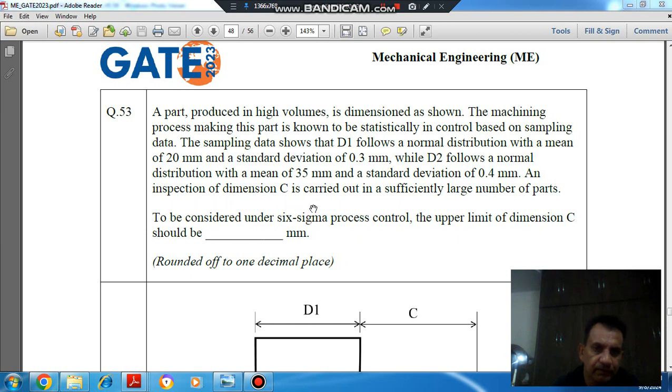An inspection of dimension C is carried out in a sufficiently large number of parts. To be considered under six sigma process control, the upper limit of dimension C should be diagonal, rounded up to one decimal.